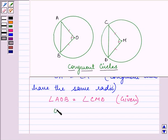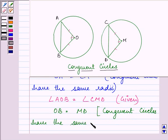And again, OB is equal to MD. Again, with the same reason that congruent circles have the same radii. So all the radii are equal to each other.